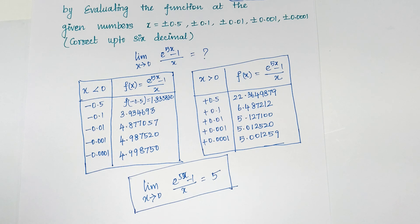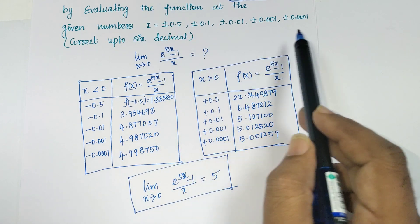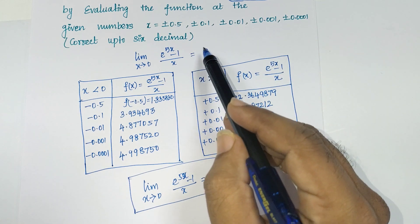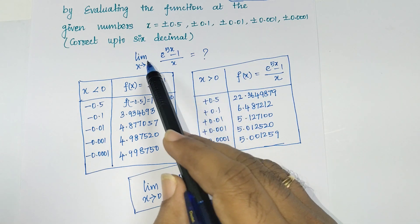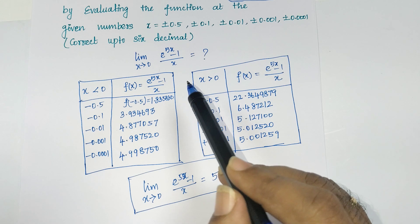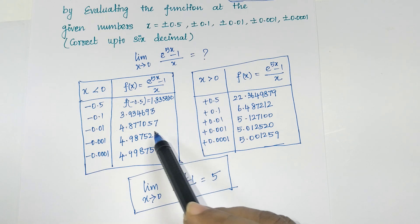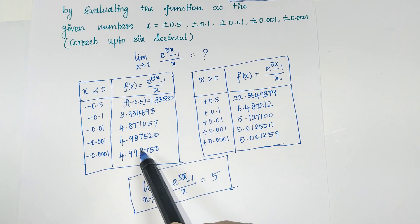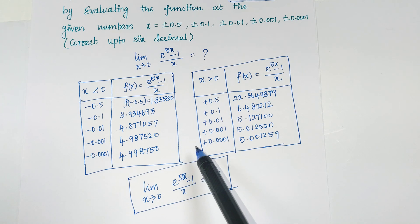This is an important point: suppose in your question they did not mention x equal to plus or minus 0.5, 0.1, etc. — you have to assume those points yourself, because we need to identify what the limit is for this function. That is the main purpose. They told us to guess the value of the limit if it exists. We are not proving existence, just identifying the limit. When substituting left-hand side and right-hand side values, we find the common point: around 4.99, with no difference between left and right. So the limit of (e^(5x) - 1) / x equals 5.